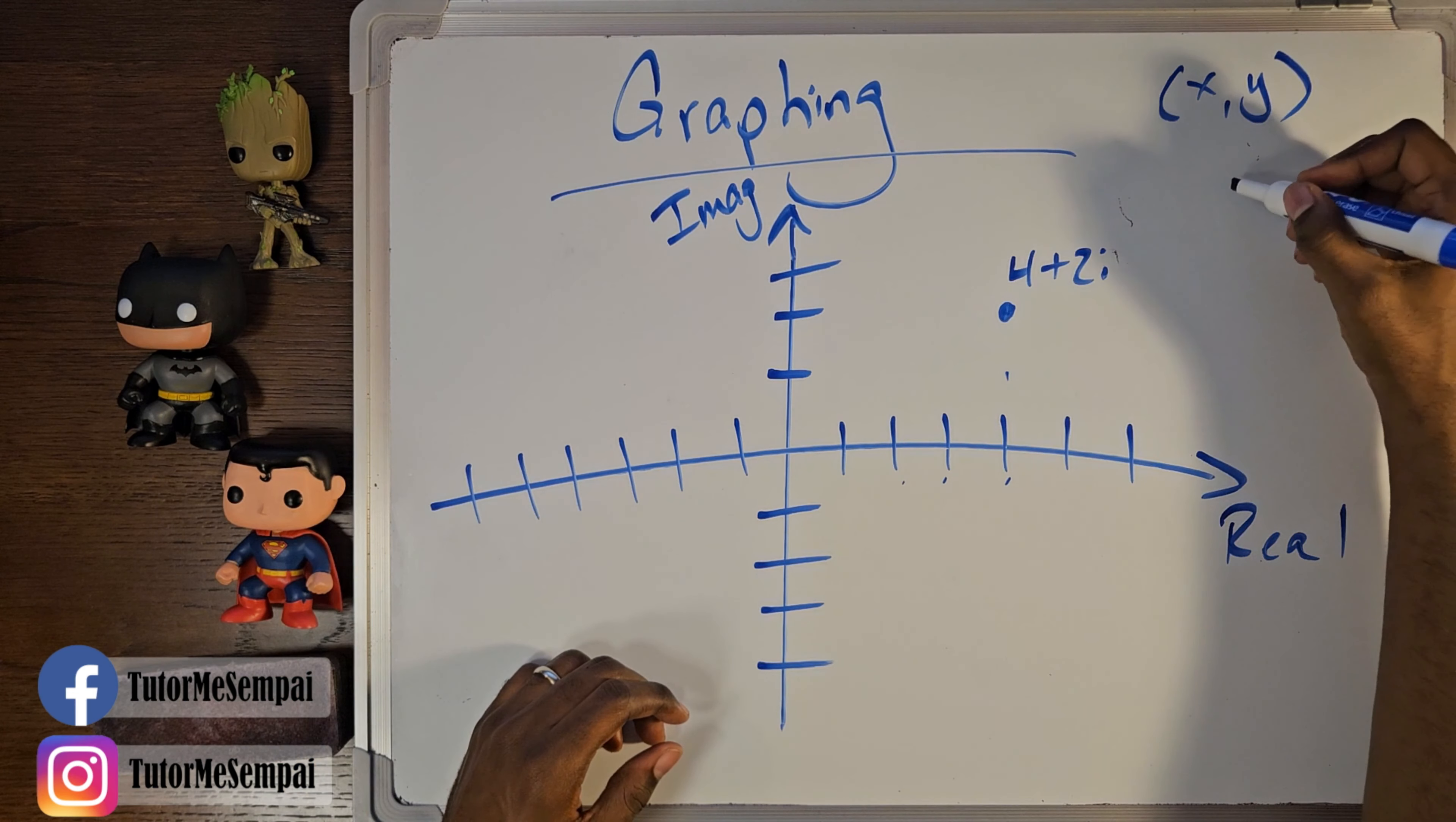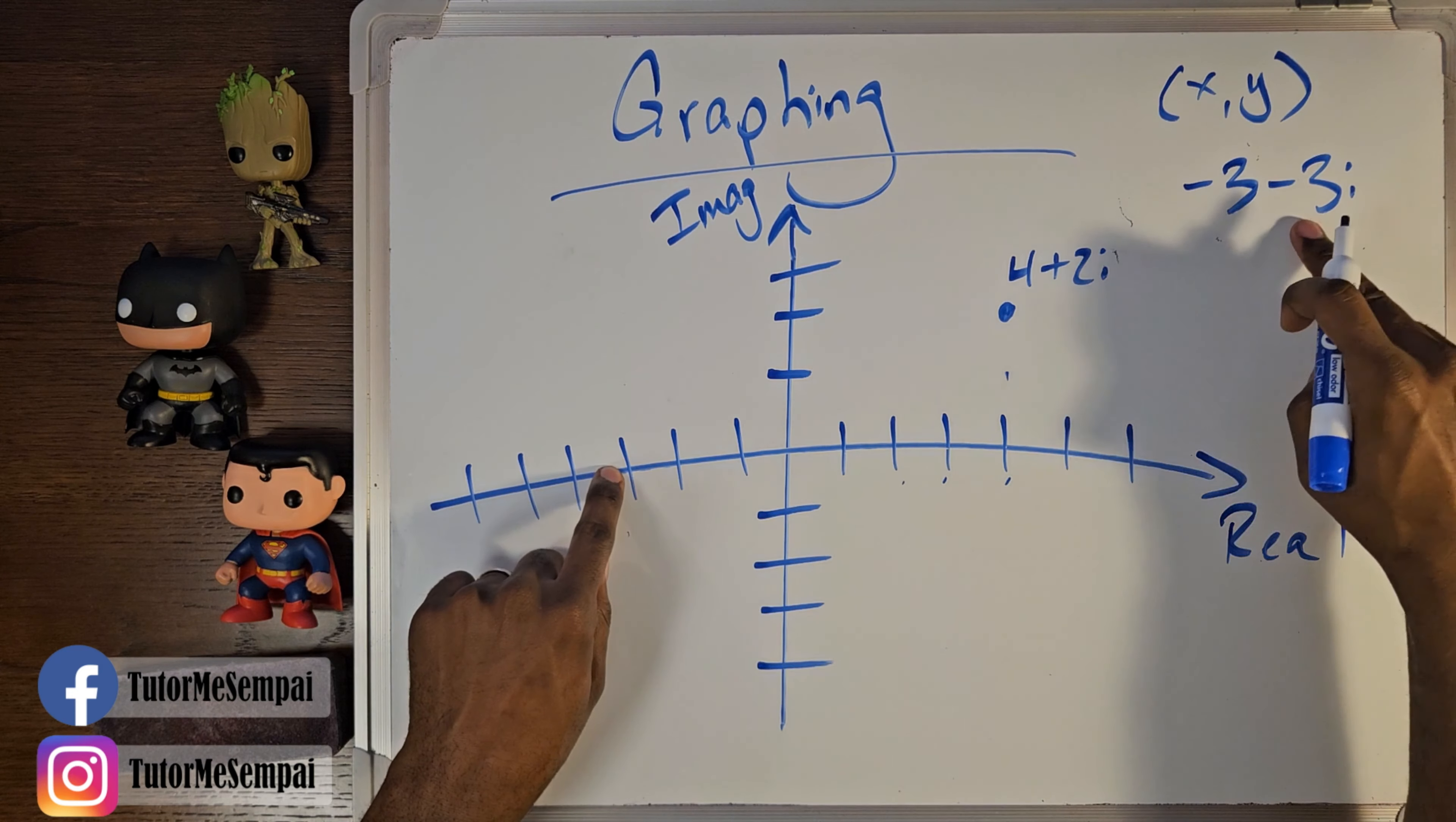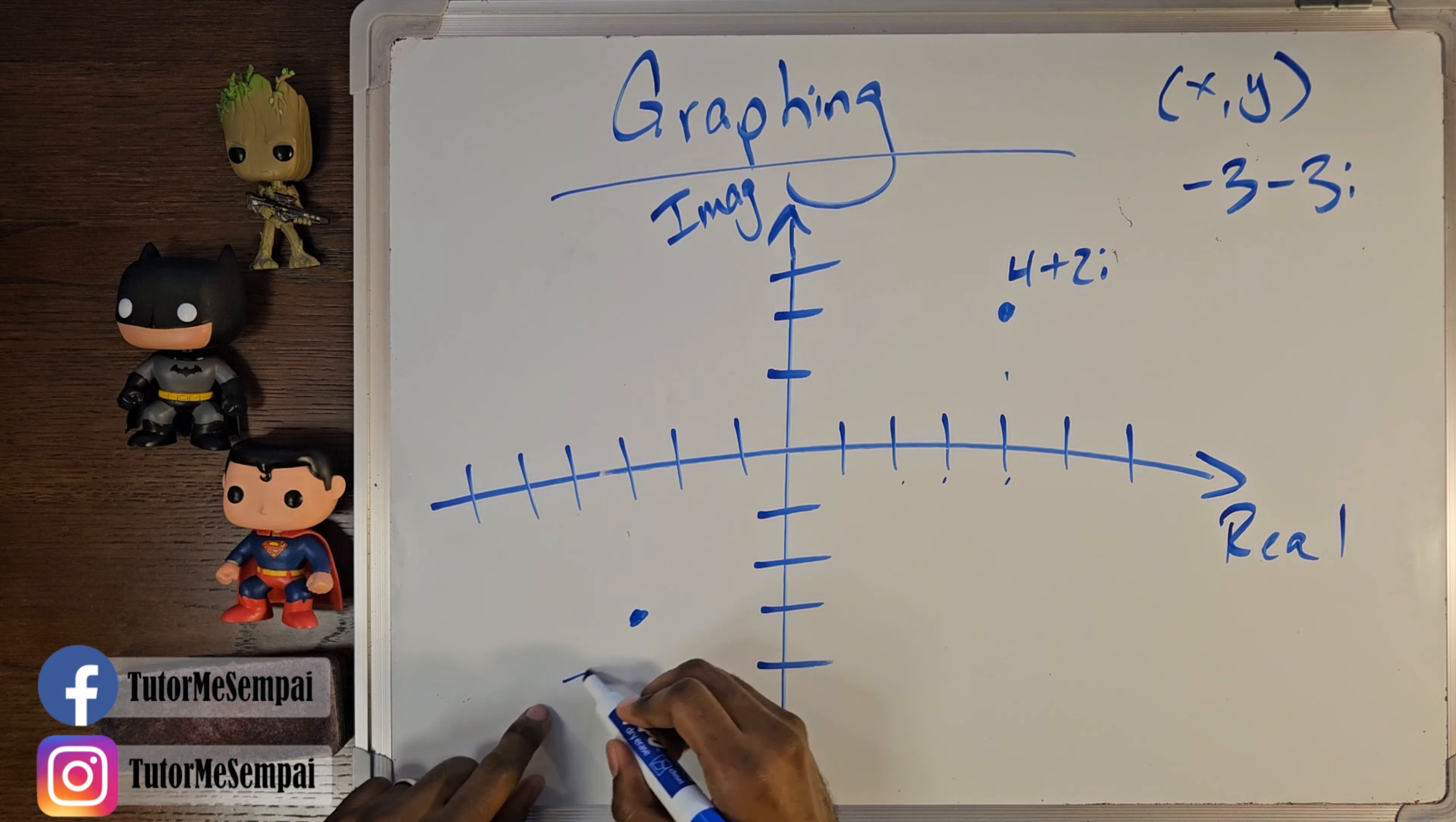Let's say we had another imaginary number. Instead of 4 plus 2i, let's say we had a negative 3 minus 3i. And we want to graph that. Well, just like you would on your x axis, you're going to start on your real axis and go back 3. So 1, 2, 3. And you're going to go instead of up on your y axis or down on your y axis, you're going to move up and down on your imaginary axis. This tells us we're going down 3. So 1, 2, 3. So it's going to be right here. This is going to be our negative 3 minus 3i.